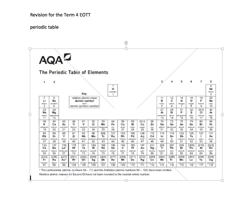The transition metals sit between groups 2 and 3. They have more complex chemistry — they can form more than one ion. For example, copper forms both copper 1+ and copper 2+. They often form coloured compounds, and compounds in this region often make good catalysts — more of that later in the course.